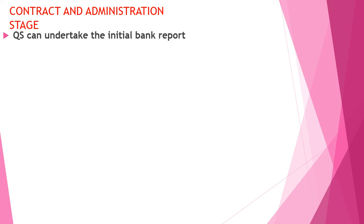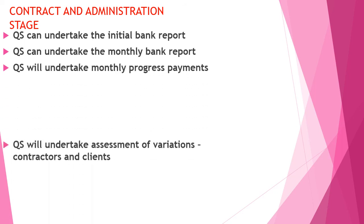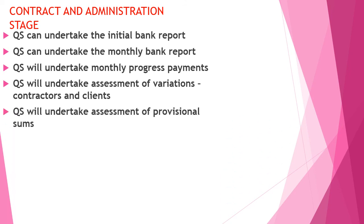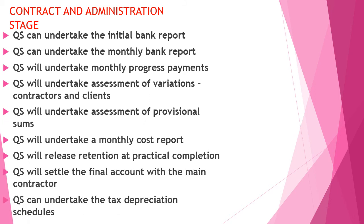In the contract and administration stage, the QS undertakes the initial bank report and monthly bank reports, undertakes monthly progress payments, ensures assessment of variations for both contractors and clients, assesses provisional sums, produces monthly cost reports, manages release of retention money on practical completion, settles the final account with the main contractor, and checks tax depreciation schedules.